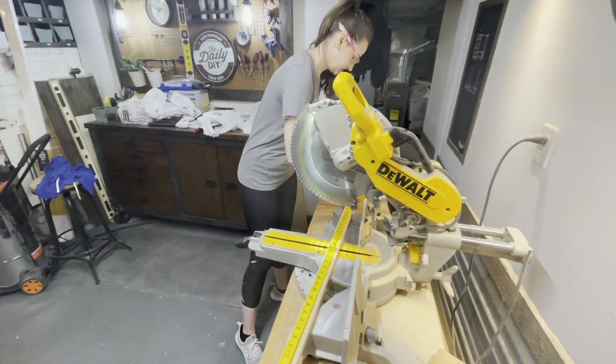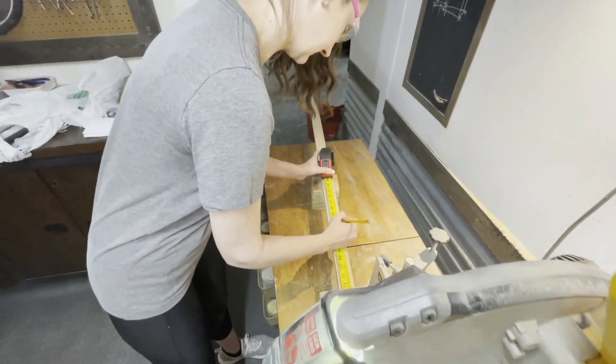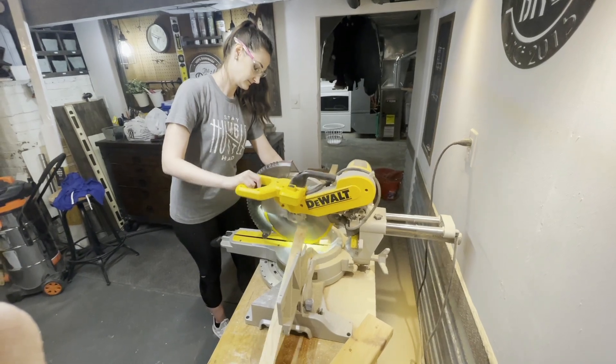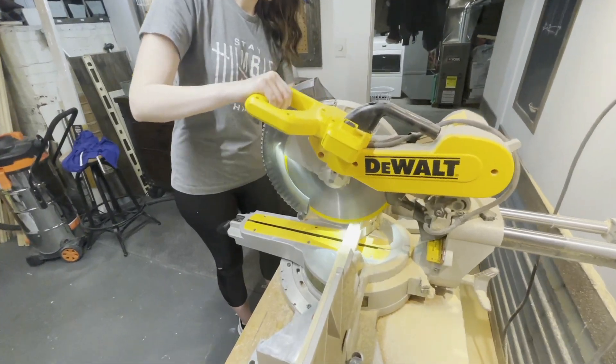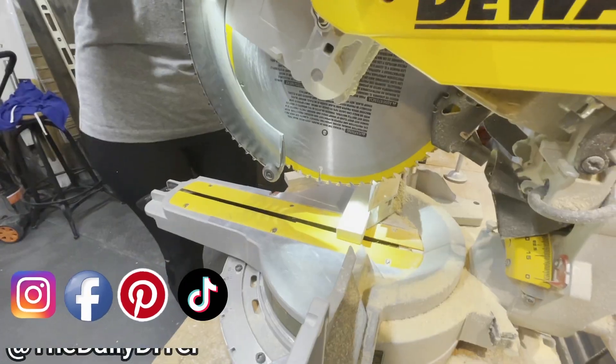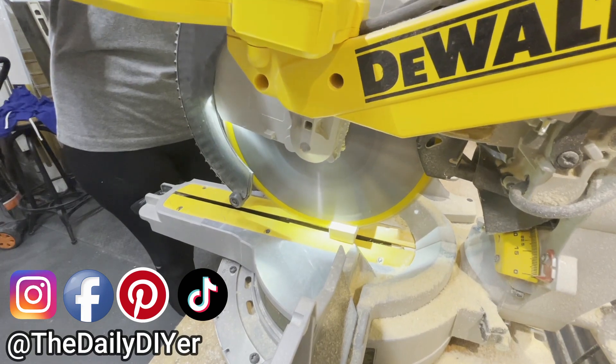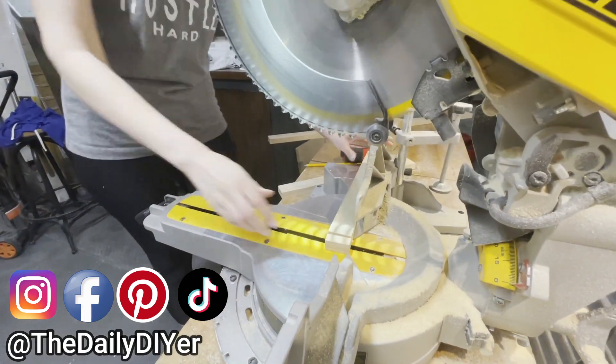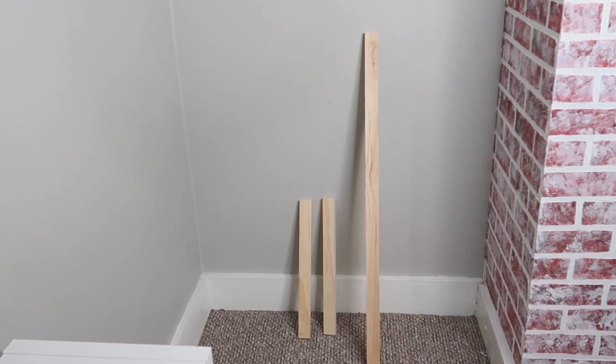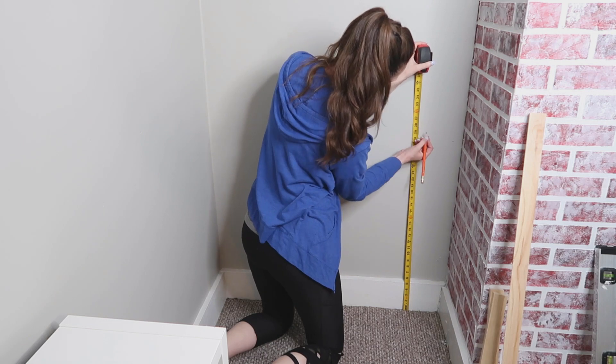Headed down into my workshop, I'm using 1x2s as the braces for the desk and the shelves. So I'm cutting these 1x2s down to those measurements that I had just taken upstairs in his bedroom.